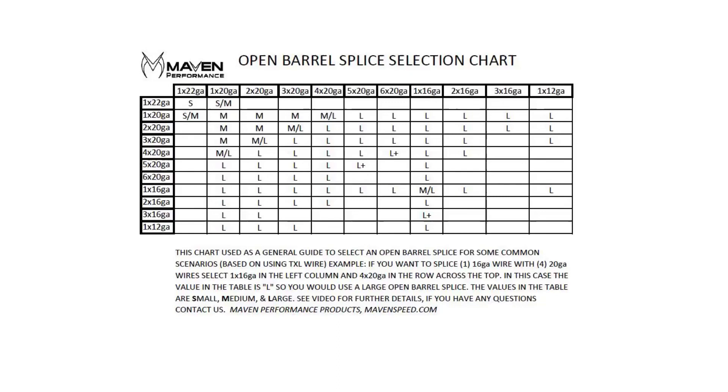You can take a 16-gauge and split it into four 20-gauge wires for injectors or coils, or maybe you have a TPS signal or 5-volt reference you want to split to several pressure transducers or to a TPS. You can get creative with all this stuff. Of course, when you build your harness, you'll find that out. Most of you probably already have done that.